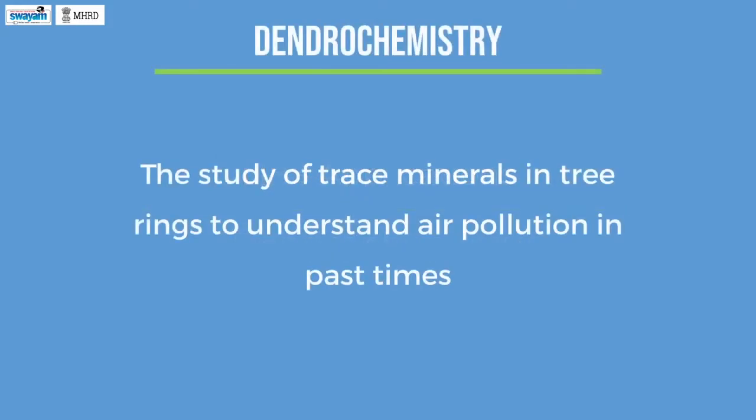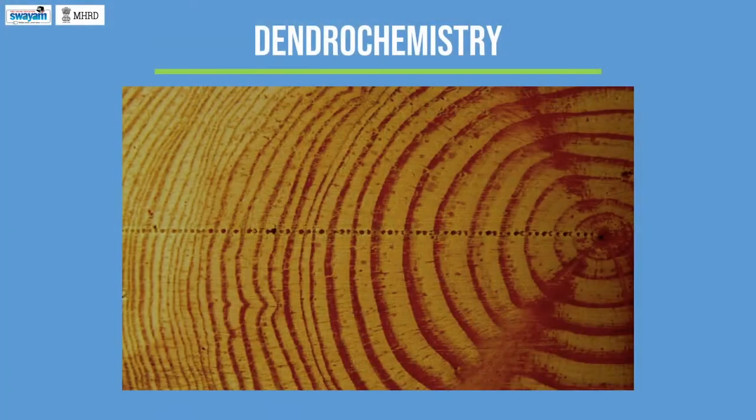Applications of LIBS: Dendrochemistry is the study of trace minerals in tree rings to understand air pollution in past times. LIBS has been used successfully for estimating elements present in each ring. By pointing the laser exactly onto the tree rings, we can get information about elements in each ring and correlate this information to air pollution in the past.